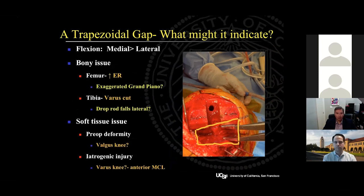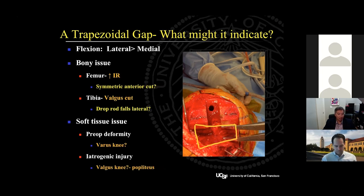Let's take an example of a trapezoidal flexion gap with a larger medial gap than the lateral one. Thinking about the femur: did you overly externally rotate it and see that exaggerated grand piano sign? Did you cut the tibia in varus? And do you see that the drop rod fell laterally? In terms of preoperative deformity, was this a valgus knee? If it was a varus knee and you saw this asymmetric flexion gap, then potentially the anterior MCL has been disrupted. The same line of thinking applies to a trapezoidal flexion gap with the lateral side larger than the medial: was the femur cut in internal rotation, was the tibia cut in valgus, was the patient a severe varus knee, or did you inadvertently cut the popliteus during the procedure?